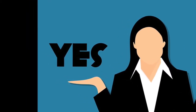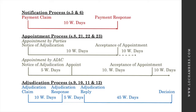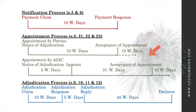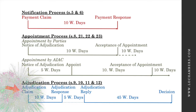Within 10 working days of the adjudicator's acceptance of appointment, the claimant can then file an adjudication claim. The respondent will then have 10 working days to file an adjudication response, and the claimant will have 5 working days to file an adjudication reply thereafter.